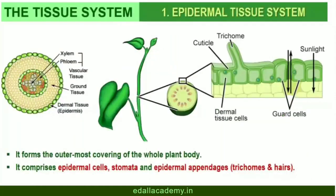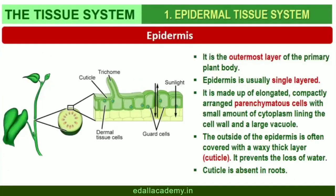The epidermal tissue system forms the outermost covering of the whole plant body and comprises epidermal cells, stomata, and the epidermal appendages — the trichomes and hairs. The epidermis is the outermost layer of the primary plant body. It is made up of elongated, compactly arranged cells which form a continuous layer. Epidermis is usually single-layered. Epidermal cells are parenchymatous with a small amount of cytoplasm lining the cell wall and a large vacuole. The outside of the epidermis is often covered with a waxy thick layer called the cuticle, which prevents loss of water. Cuticle is absent in roots.